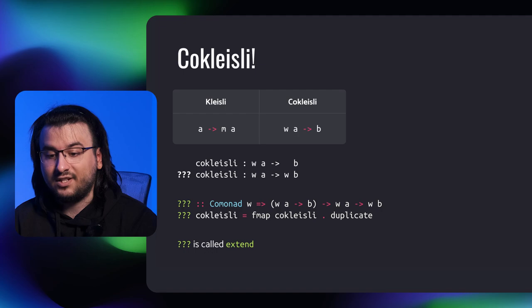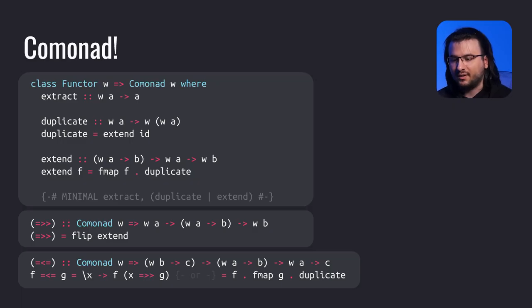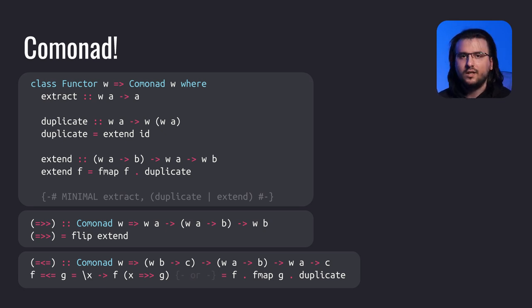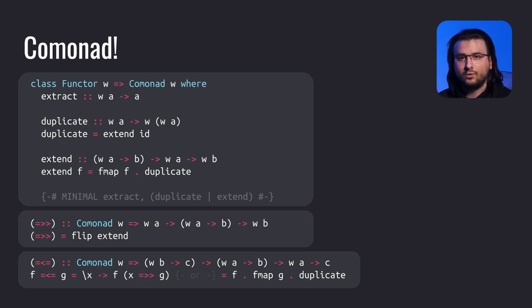We can indeed, though the context w needs to instantiate the comonad type class, since the definition of this mystery function uses duplicate. This mystery function is called extend. And so we define the comonad type class as follows: it accepts the type argument w, which has to instantiate Functor, and contains three functions — extract, duplicate, and extend. Duplicate and extend can be defined in terms of each other. Extract is the dual of monadic return, duplicate is the dual of monadic join, and extend is the dual of monadic bind.